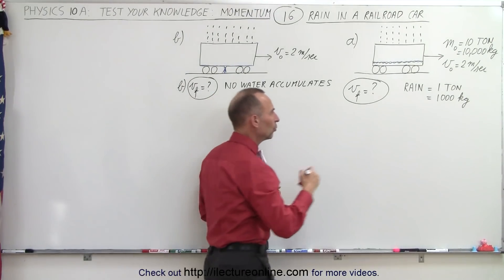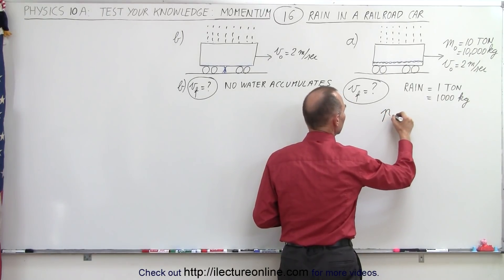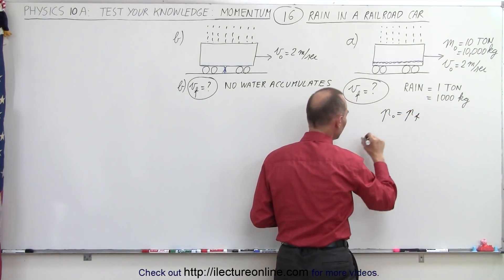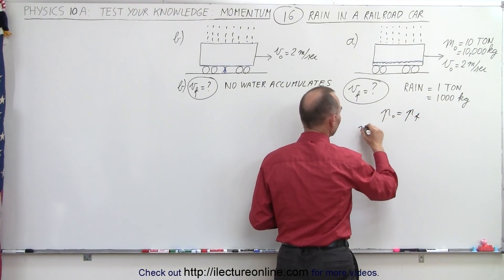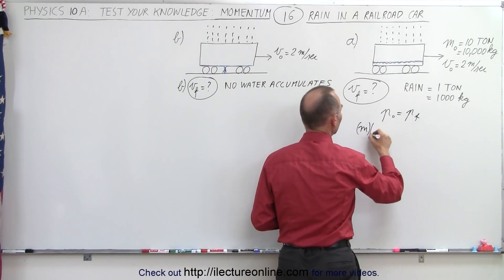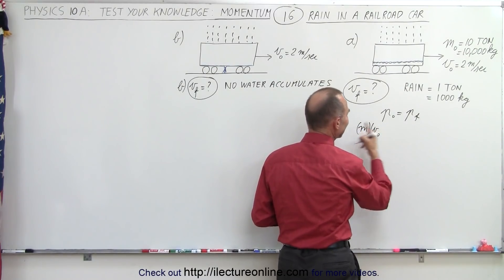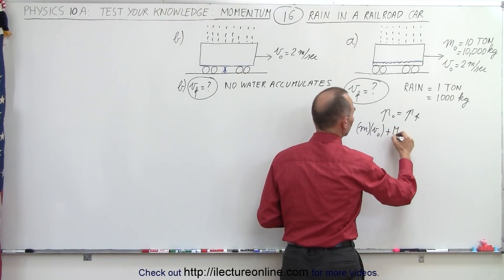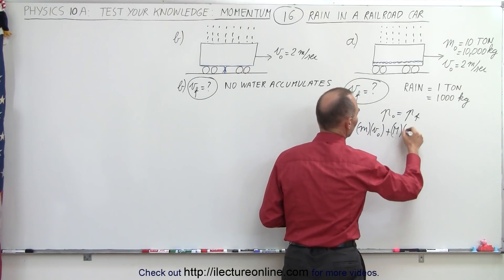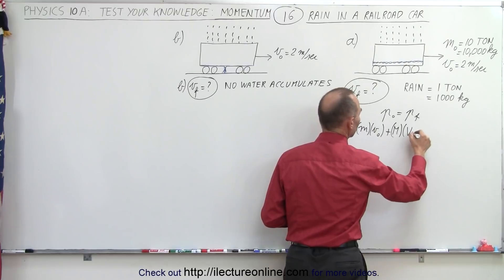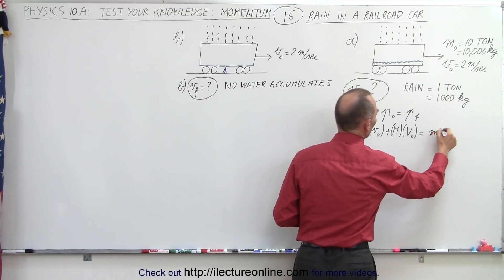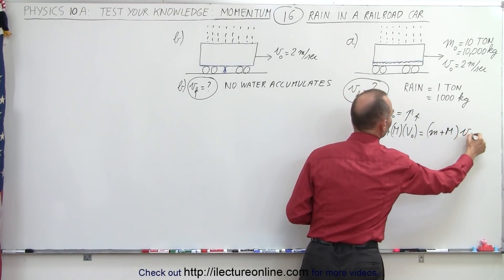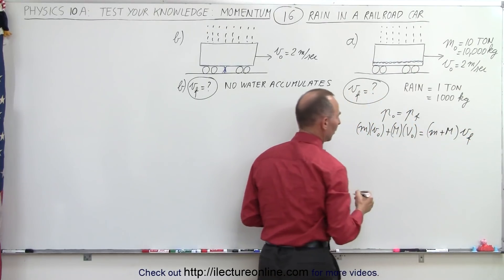For Part A, we use conservation of momentum: p_initial equals p_final. That means the mass of the water times its initial velocity in the x-direction, plus the mass of the train times its initial velocity, must equal the mass of the water plus the mass of the train times the final velocity — which is what we're looking for.